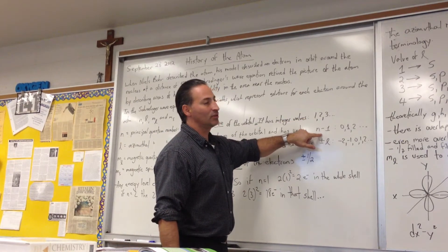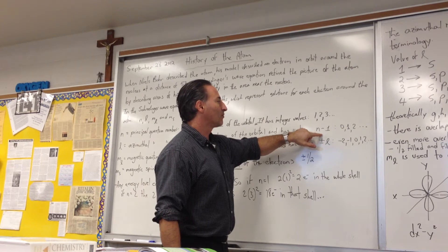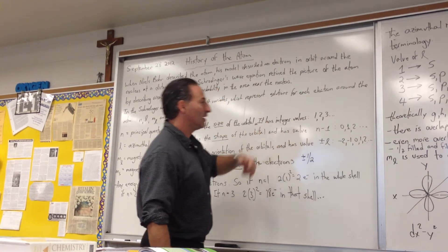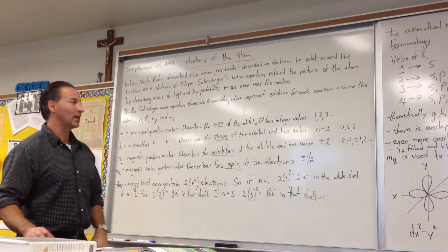So if N has a value of 2, then L has a value of 1, or it can also have a value of 0, but it has to be less than N. It's always at least 1 less than N.